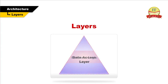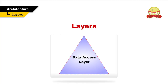The data access layer consists of the definition of database tables and columns and the computer logic that is needed to navigate the database. The data access layer enforces rules regarding the storage and access of information. For example, dates must be valid dates and numeric fields must never contain alphanumeric characters.